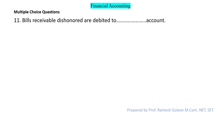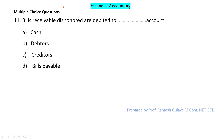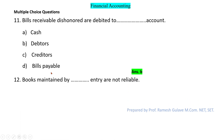The next question asks: bills receivable dishonored are debited to which account? Bills receivable dishonored are debited to the debtors account.